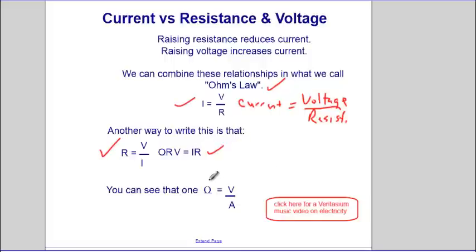And these are the units. This symbol omega is for ohms. V is for voltage or volts. And A is for amperes or amps. Check out the music video.